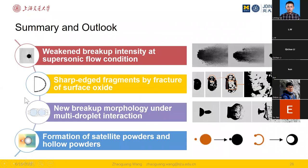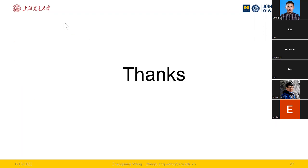Here is a brief summary. Starting from conventional understandings of droplet breakup, four new aspects of gas atomization in metal powder production were introduced: droplet breakup at supersonic flow conditions, droplet breakup with surface oxidation, droplet breakup with multi-droplet interaction, and special breakup patterns resulting in satellite powders and hollow powders. Thank you for your attention. Thanks Dr. Zhao Guan Wang for the very interesting talk.